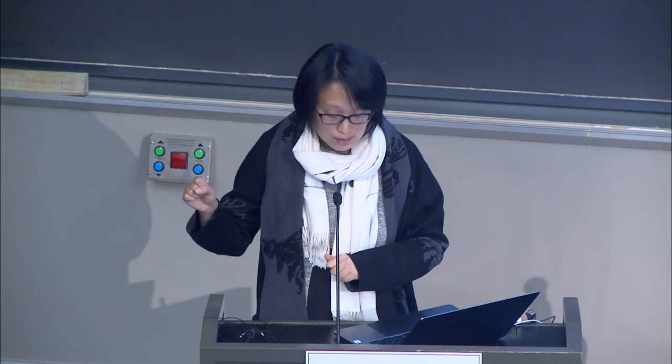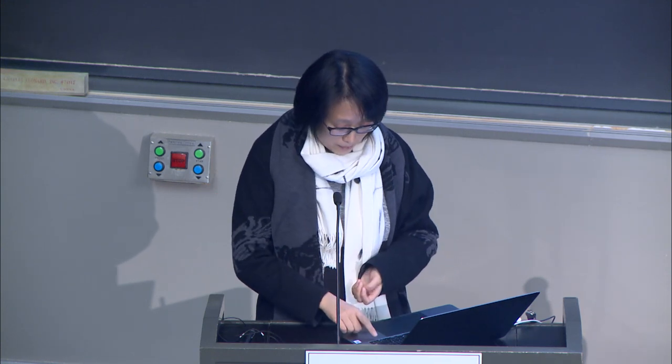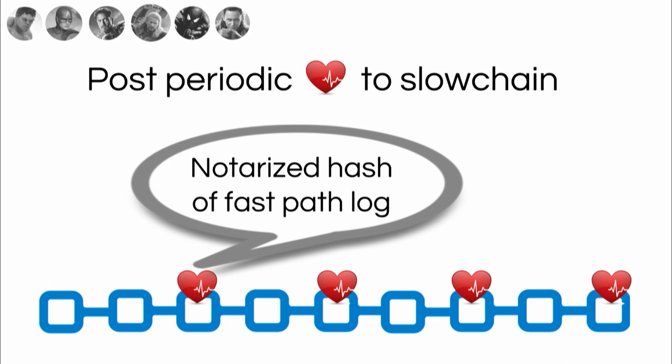This achieves both performance and decentralization because almost all the time you should be operating on the fast path. Now I will describe how this fallback mechanism is done, because this actually matters to the alleged flaw I'll talk about in the second part. I only have to describe two things: one is how to detect fast path failure and second how to do the fallback. For detection we have a very simple heartbeat mechanism. Every now and then the committee will take a cryptographic hash of the fast path log and sign it. When the hash gains votes from three-quarters of the committee it becomes notarized, and this notarized hash is called a heartbeat. A heartbeat serves two purposes: it's a keep-alive mechanism, and it's a cryptographic checkpoint of the fast path log.